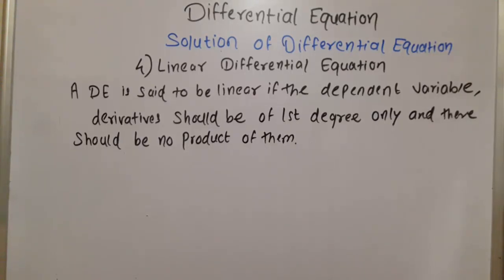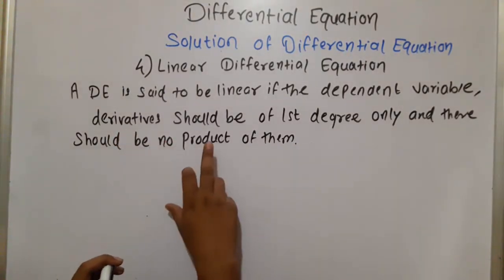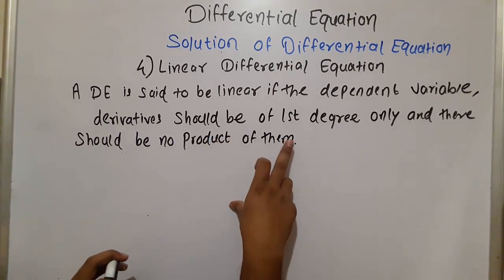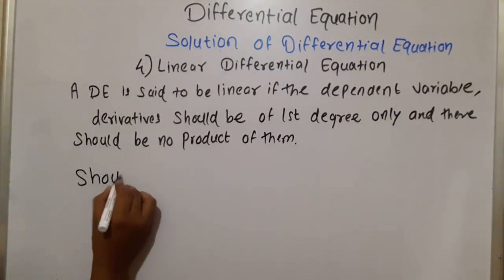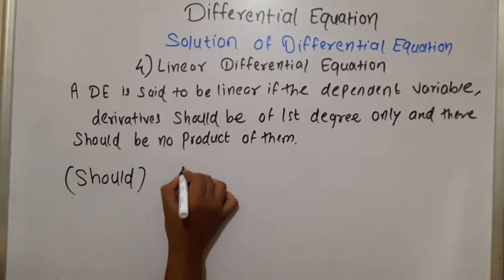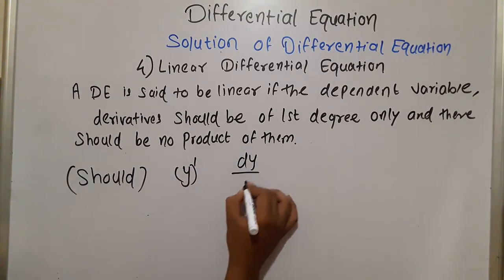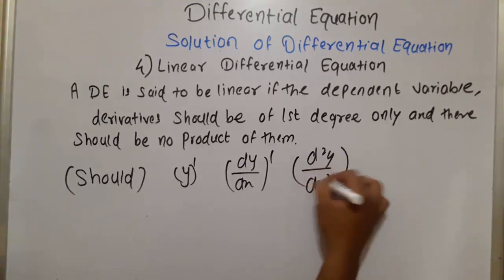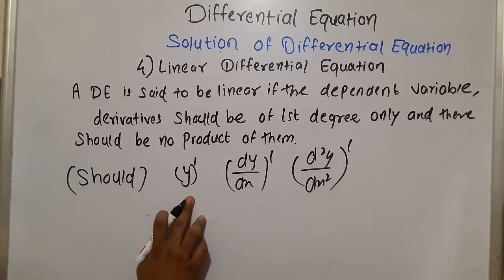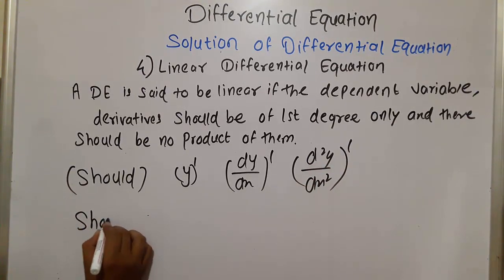Welcome to the next session on differential equations. Now we study the solution of differential equations. The fourth type is the linear differential equation. A differential equation is said to be linear if the dependent variable and its derivatives should be of first degree only — so y, dy/dx, and d²y/dx² should each have degree 1.